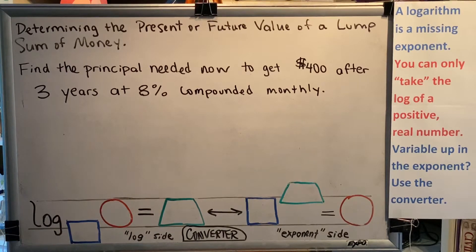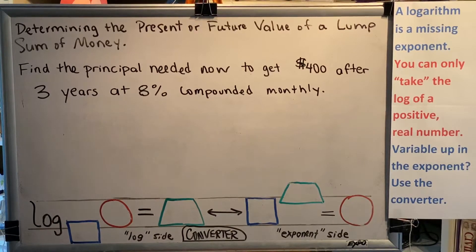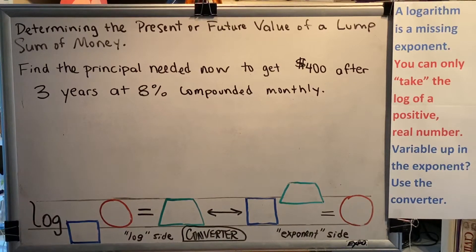The topic of this video is determining the present or future value of a lump sum of money. Let's look at a problem. Find the principal needed now to get $400 after three years at 8% compounded monthly.